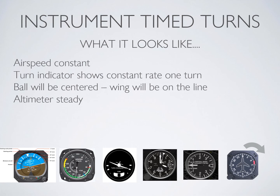A quick review of what your instruments look like during this turn: you don't have your attitude indicator or heading indicator. Your airspeed will be constant. The turn indicator will show a constant rate of turn, the ball will be in the center if you're coordinated, and the wing will be on the lower line. The altimeter and VSI will also be steady if you are not climbing or descending.